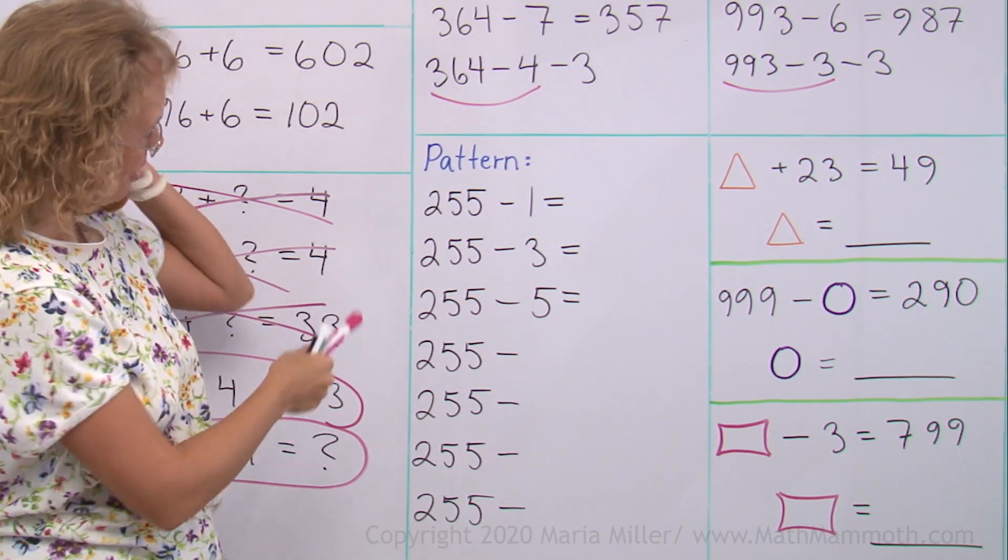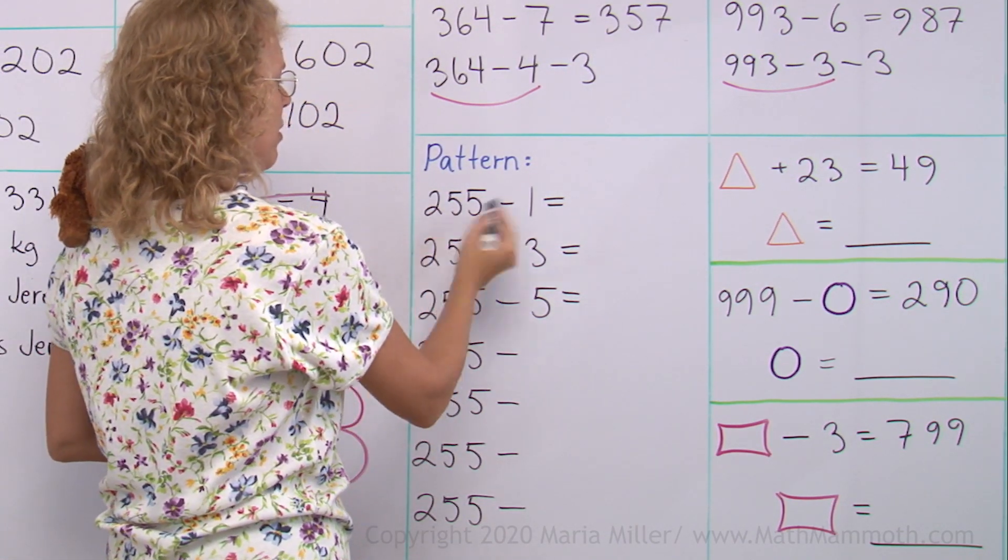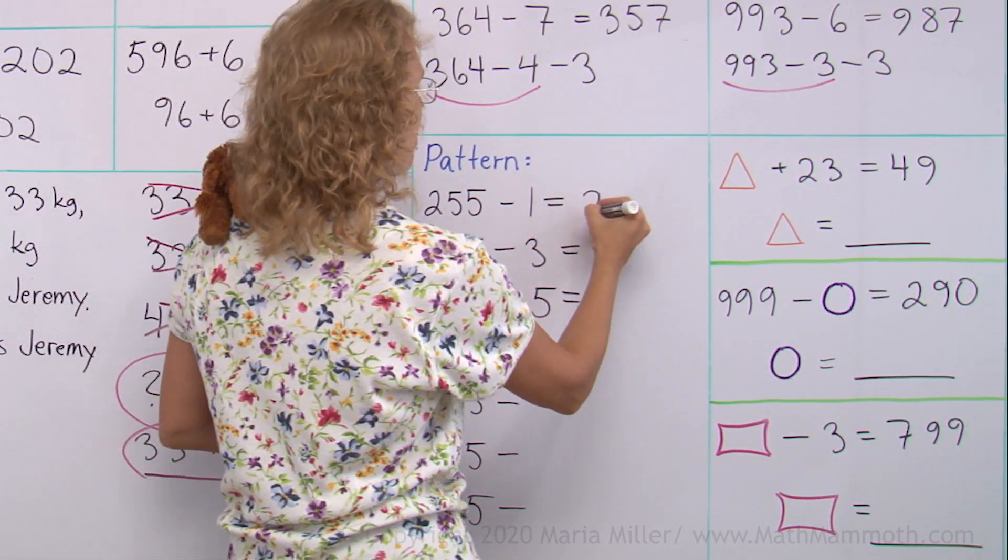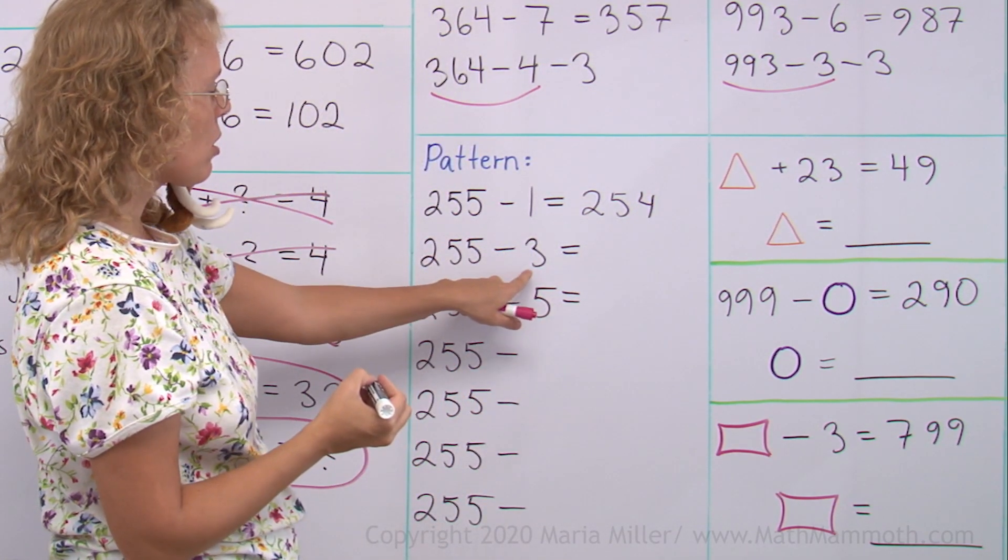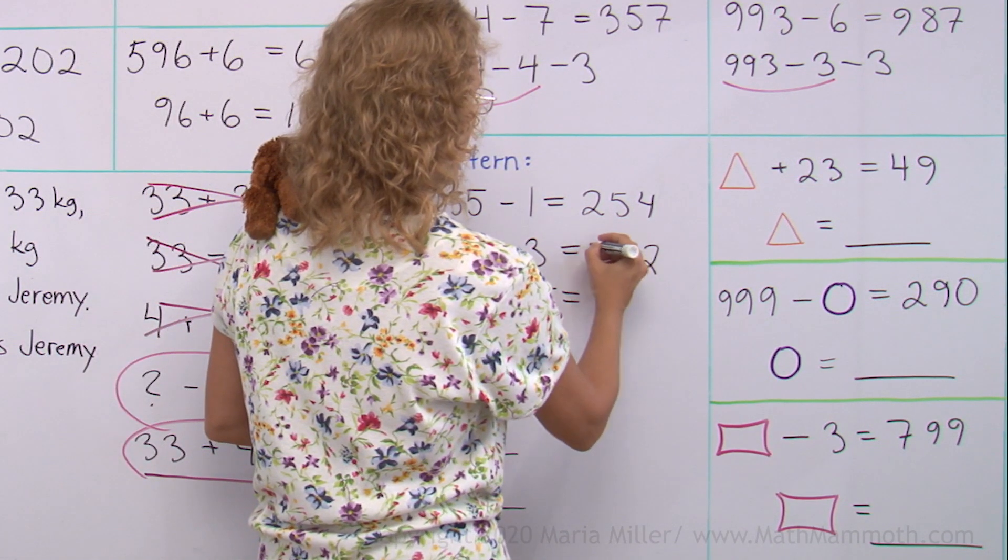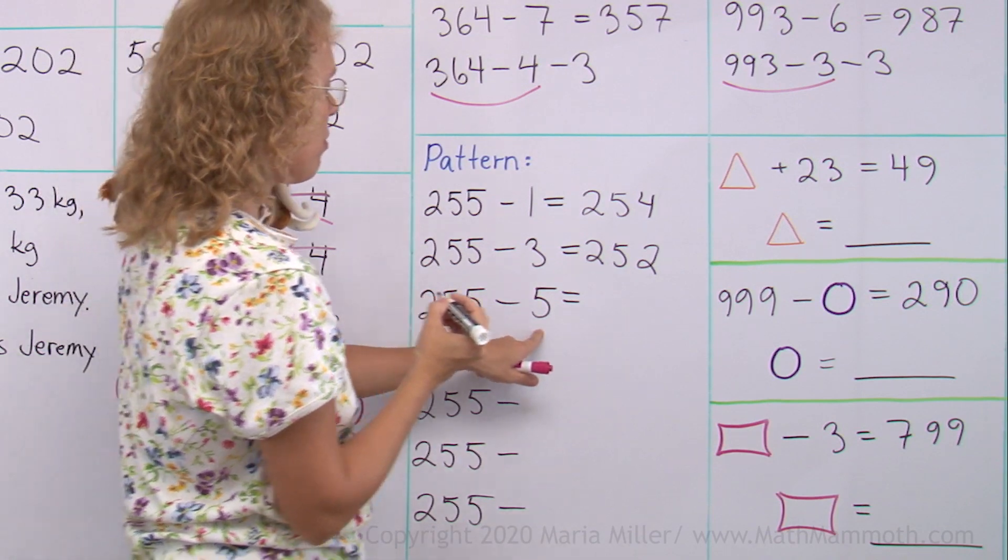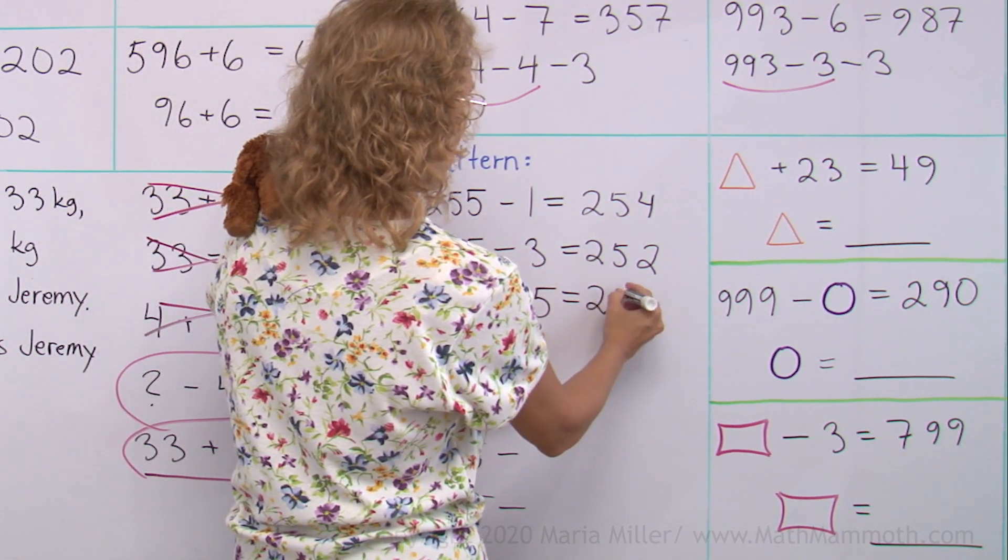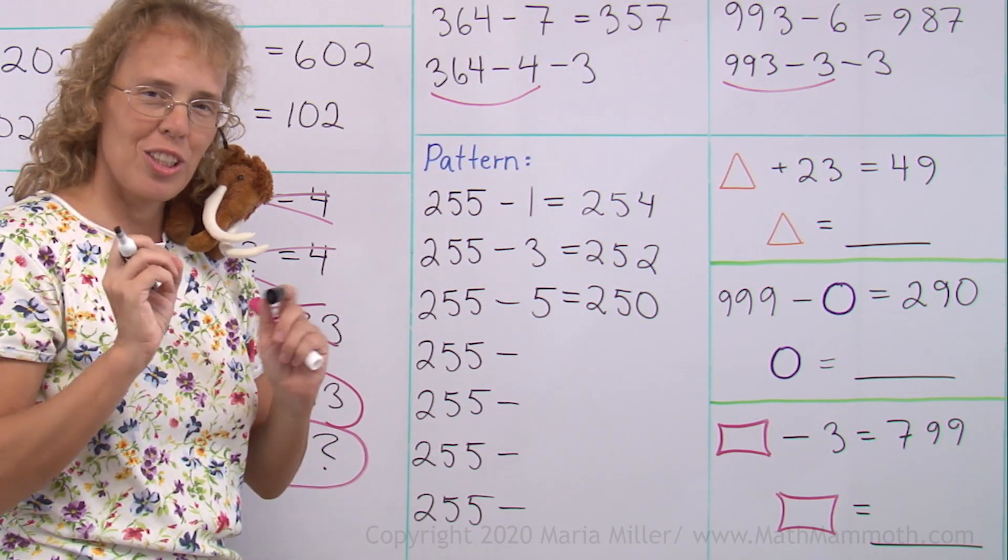Now we have something different, Mathi. Look. A pattern. 255 minus 1. Oh, that's easy. 254. Then what? 255 minus 3. Okay. 5 minus 3 would be 2. 252. Right? And then minus 5. So we get 250. But now what? How does the pattern continue?